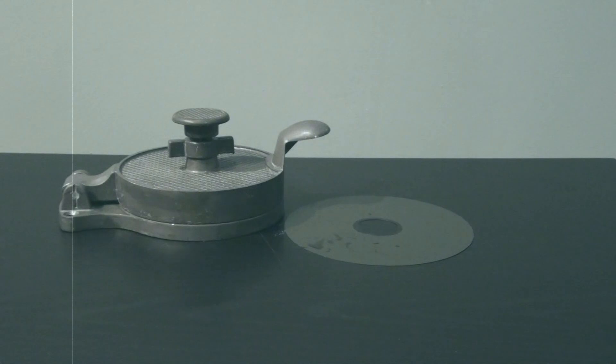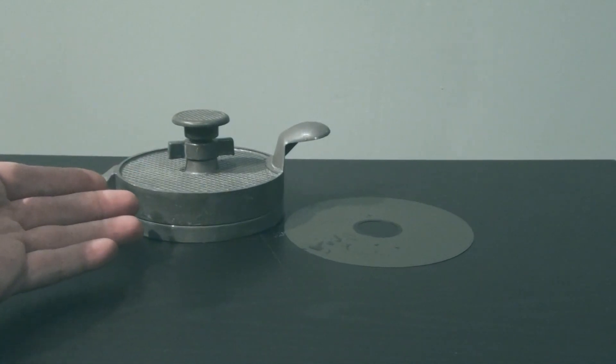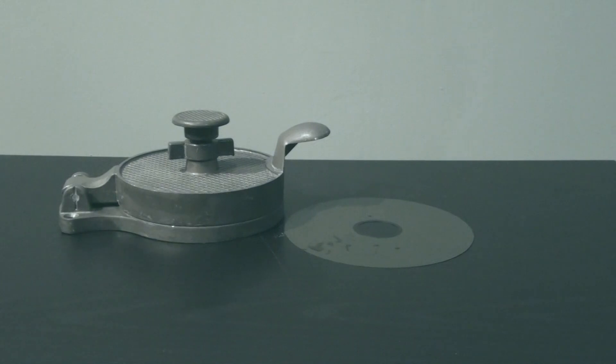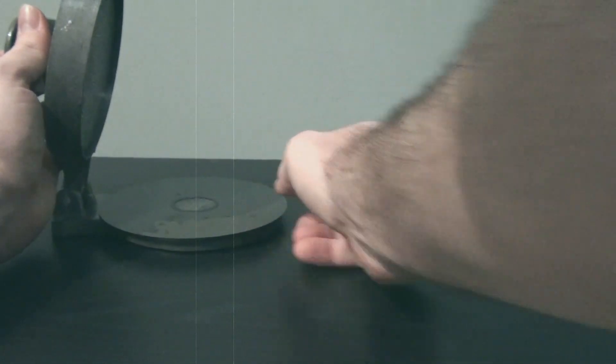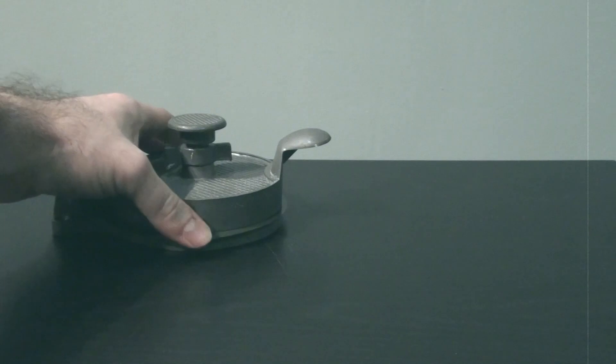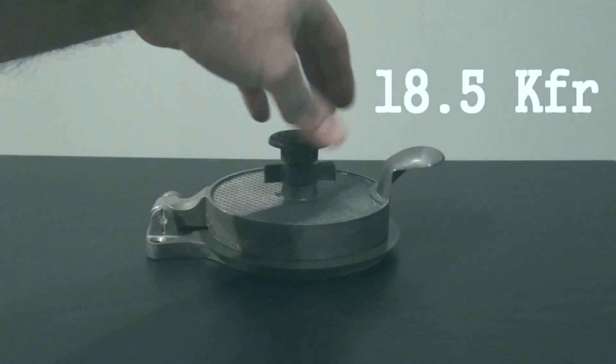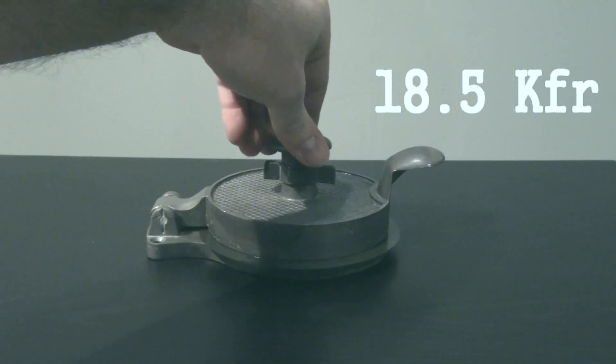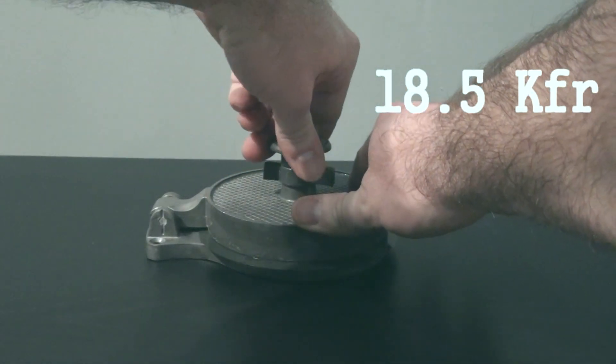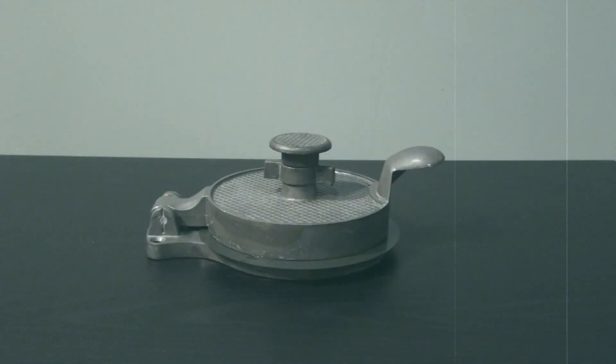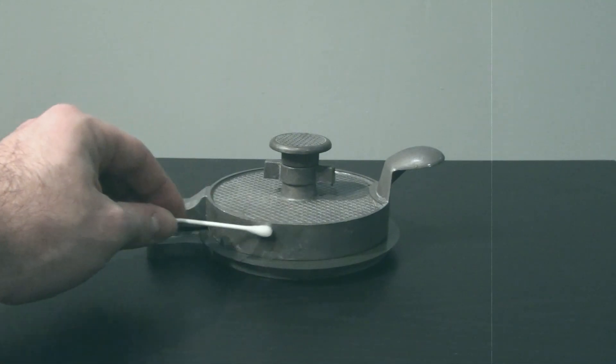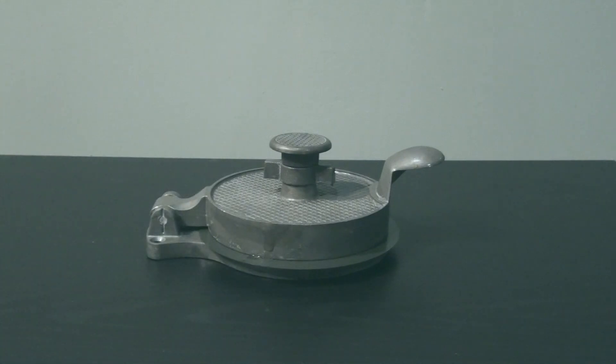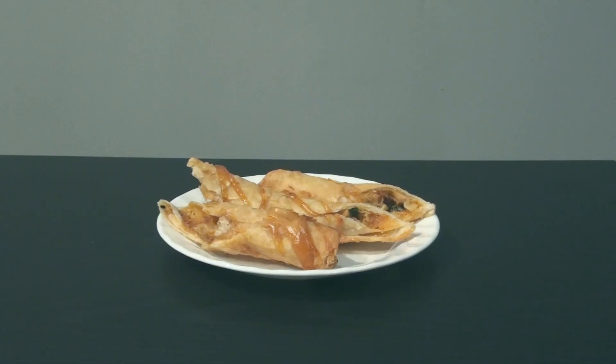Here we have an ordinary hamburger press. Take your hamburger press and place it inside. Make sure to tighten down to 18.5kfr. You can also dab the hamburger press with some vinegar as well for some fun. The hamburger press has become Mexican food.